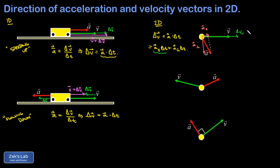I'll call that delta v-parallel, and at this point I can already see that my speed has increased. I still have to add the perpendicular component: a-perpendicular times delta t points in the same direction as a-perpendicular, giving me a little delta v-perpendicular. When I vector-add these two vectors, I get a vector that's both longer and rotated clockwise. The parallel component of a controls the speed — if it points in the same direction as v, my speed goes up. The perpendicular component of a controls the turning of the velocity vector; in this case, it made the velocity vector turn clockwise.